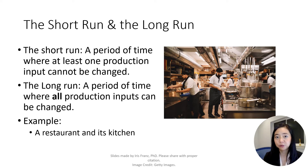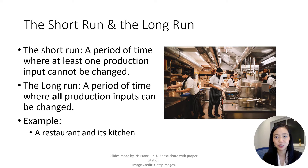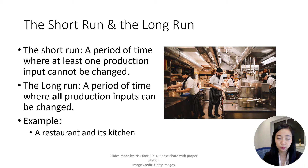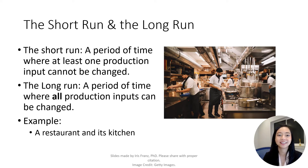The short-run is a period of time where at least one production input cannot be changed. The long-run, however, is a period of time where all production inputs can be changed. For example, for a restaurant, in the short-run the size of the kitchen cannot be changed, but you can change the amount of food being prepared, such as vegetables and meat. In the long-run, all inputs can be changed, including the size of the kitchen.